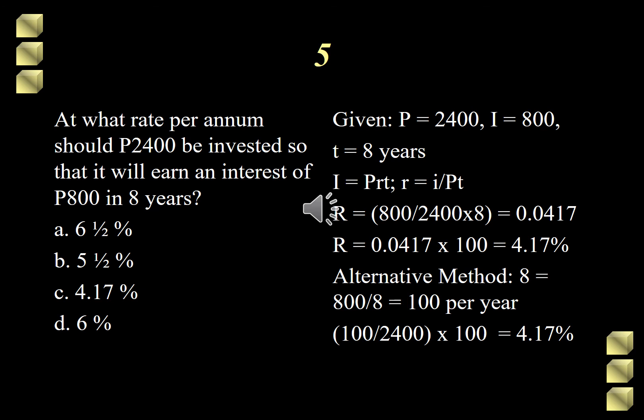To know the interest rate per year or per annum, simply divide 100 by the principal, which is 2,400. Hence, we get an answer of 4.17%. If you are able to understand the concept of interest and interest rate, you can do it without memorizing the formula. The correct answer in this problem is letter C, 4.17%.